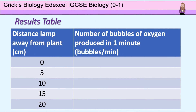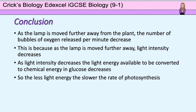You should have recorded your results in a table similar to this one. Hopefully what you've found is that as the lamp is moved further away from the plant, the number of bubbles of oxygen released per minute decreases. This is because as the lamp is moved further away, the light intensity is decreasing. And as the light intensity decreases, there is less light energy available to be converted to chemical energy in glucose, so the less light energy, the slower the rate of photosynthesis.